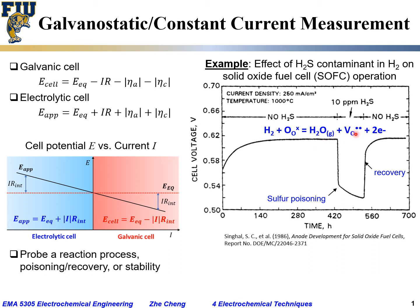The products also include V_O•• (an oxygen vacancy with two positive charges, where the dots represent positive charge) and two electrons are released. The net charge on the right is 2+ and 2−, equaling zero, matching the left side. Mass is also balanced: two hydrogens and one oxygen on each side. Note that the oxygen vacancy does not contain oxygen. So this half-cell reaction is both charge-balanced and mass-balanced.